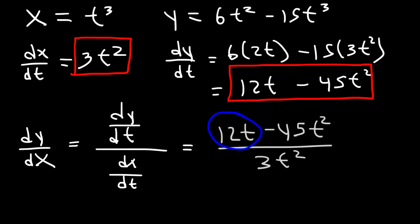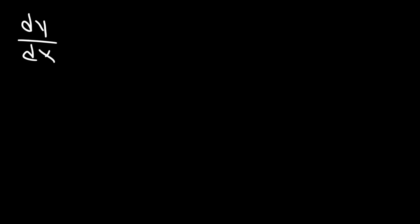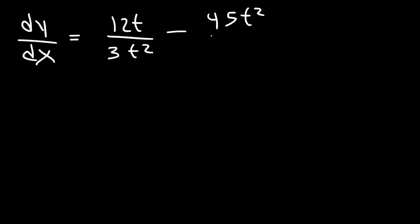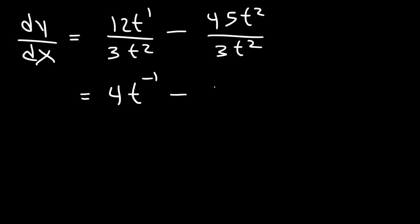So now we can find dy/dx. That's going to be dy/dt divided by dx/dt. So it's going to be 12t minus 45t squared divided by 3t squared. We separate it into two fractions: 12t over 3t squared gives us 4 over t, and 45t squared over 3t squared gives us 15. So the final answer is 4 over t minus 15.